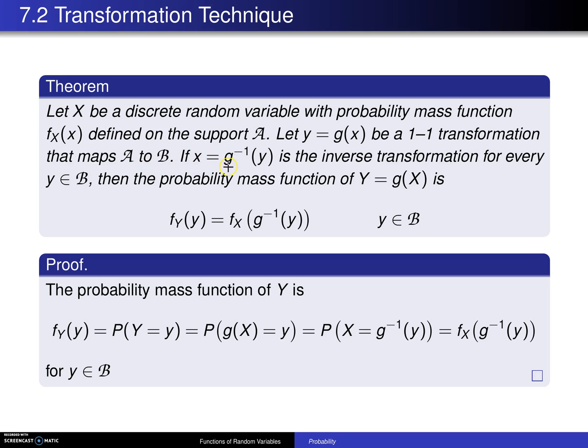If x equals g inverse of y is the inverse transformation for every y element of script B, then the probability mass function of Y equals g of X is F sub Y of y equals F sub X of g inverse of y for every y element of B.